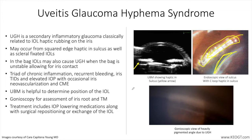With anterior chamber IOLs, remember that the proper size of the lens is obtained by using the horizontal corneal white-to-white distance and adding one millimeter. It is important to note that in-the-bag IOLs may also cause UGH syndrome when the bag is unstable, allowing for contact with adjacent tissues.